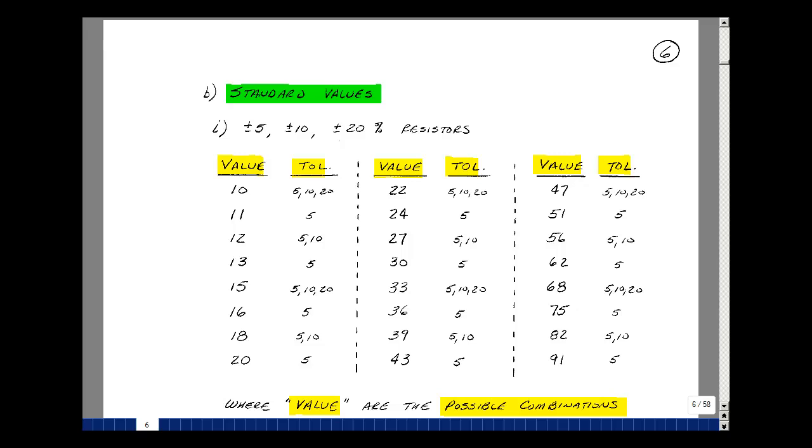Carbon composition and carbon film resistors are usually available in 5, 10, and 20% tolerances. Not every possible value is available. What's listed here are all the combinations of the first two bands. In other words, I could have a 1 and a 0, and then I have 10 raised to a power.